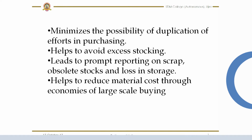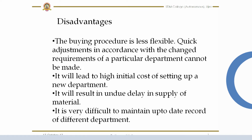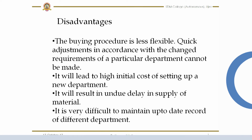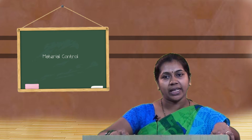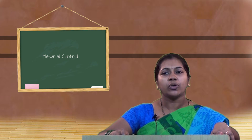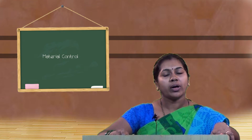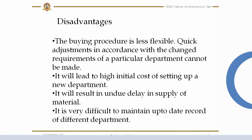Disadvantages of centralized buying: the buying procedure is less flexible. Quick adjustments in accordance with the changing requirements of a particular department cannot be made. It leads to high initial cost of setting up a new department. It results in undue delay in supply of material. It is very difficult to maintain up-to-date records of different departments.